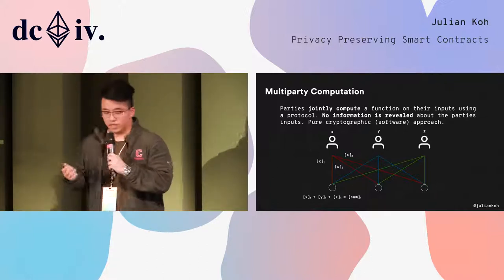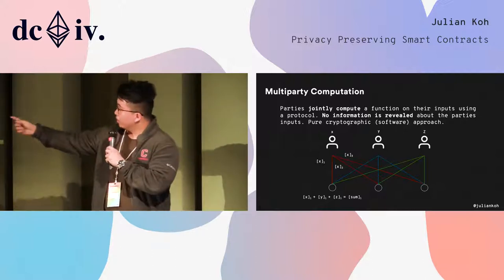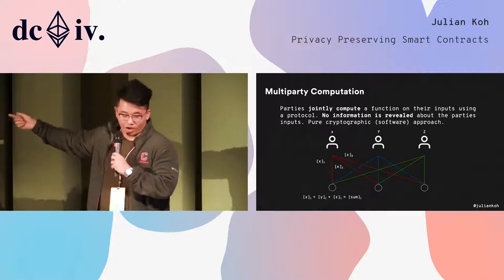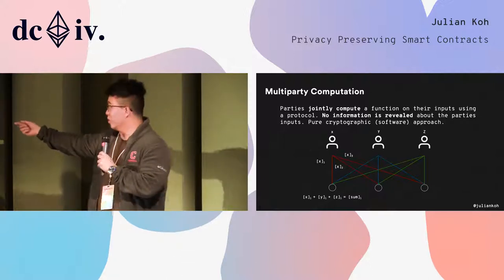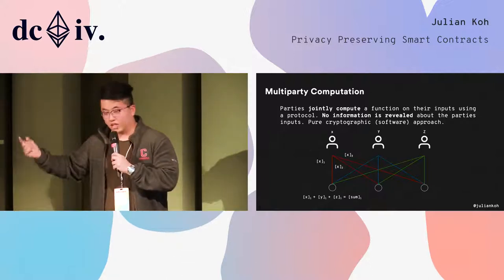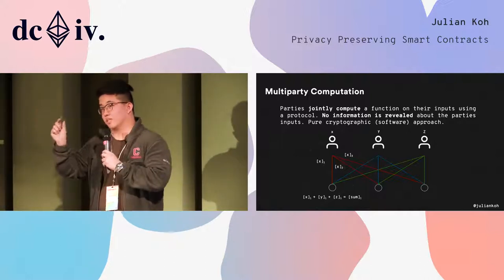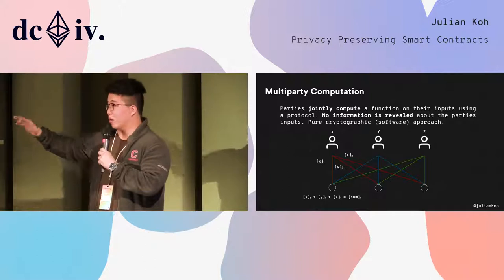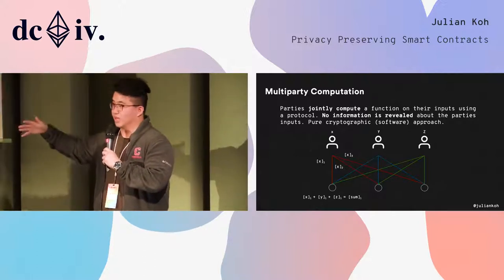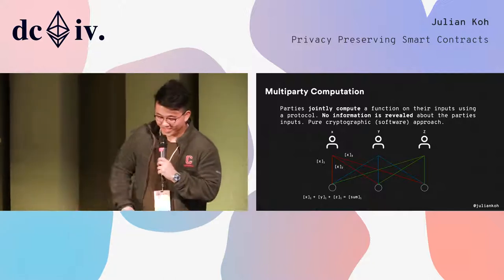Y will do the same, Z will do the same. In the end, one of these nodes only gets X1, Y1, Z1, and can calculate sum 1. So that node doesn't actually see the full input of any of X, Y, or Z — it only gets a piece of it. In the end, all three nodes can come together and produce the actual sum without anyone seeing what the actual inputs were. It's quite magical, actually.